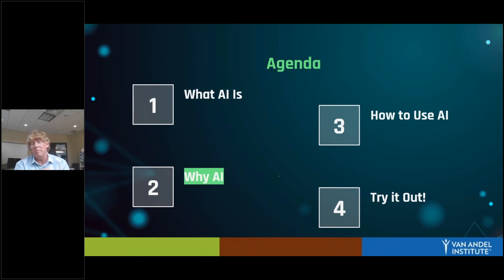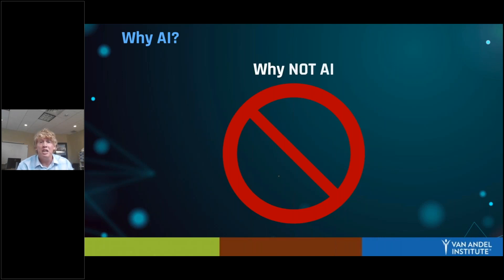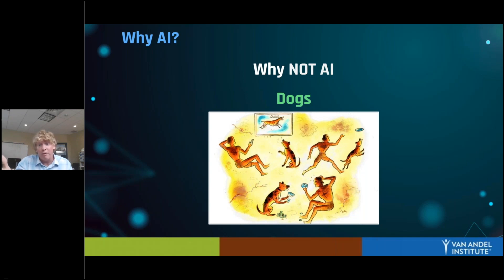Let's talk about why we might use AI in the classroom — but before we do, let's talk about why we might not. Simply, when a machine is doing the thinking for our students, the students aren't going to be learning that particular skill. We can see this in practice by thinking about dogs. Anthropologists have seen that when humans domesticated dogs, our brains actually shrank a little bit because dogs were doing things for us — we lost some of our ability to smell because we didn't need it anymore.